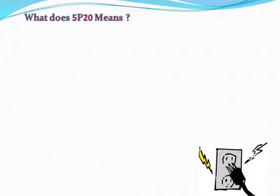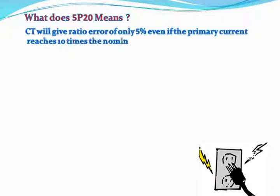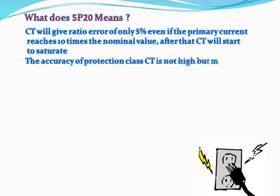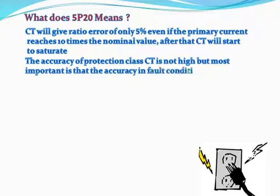What does 5P20 mean? The CT will give a ratio error of only 5% even if the primary current reaches 20 times the nominal value, after which the CT will start to saturate. The accuracy of protection class CT is not high, but most importantly, the accuracy in fault conditions is high enough to sense the fault.